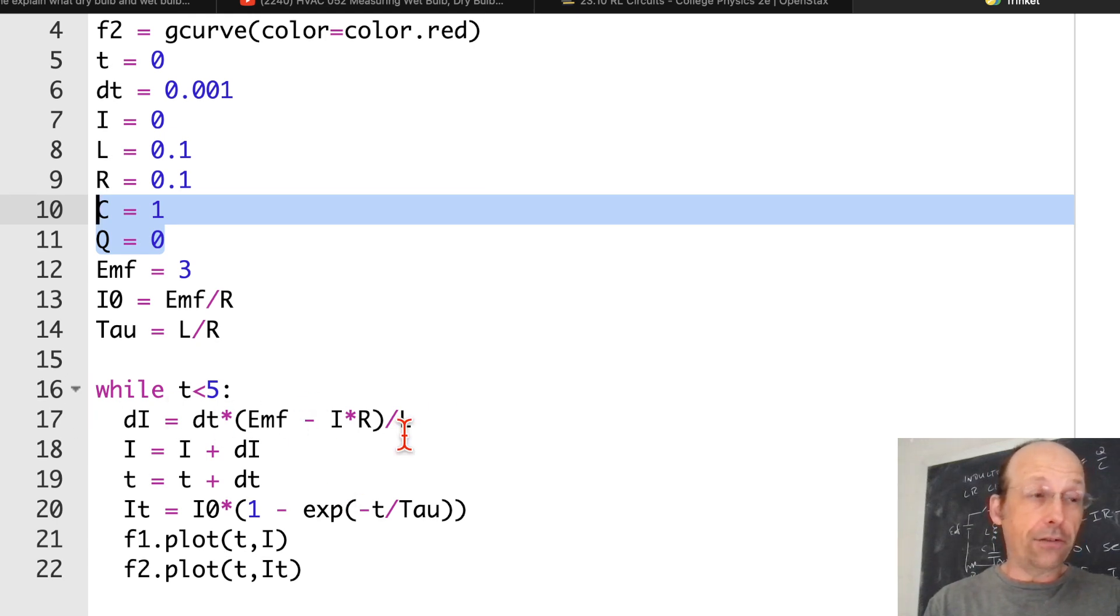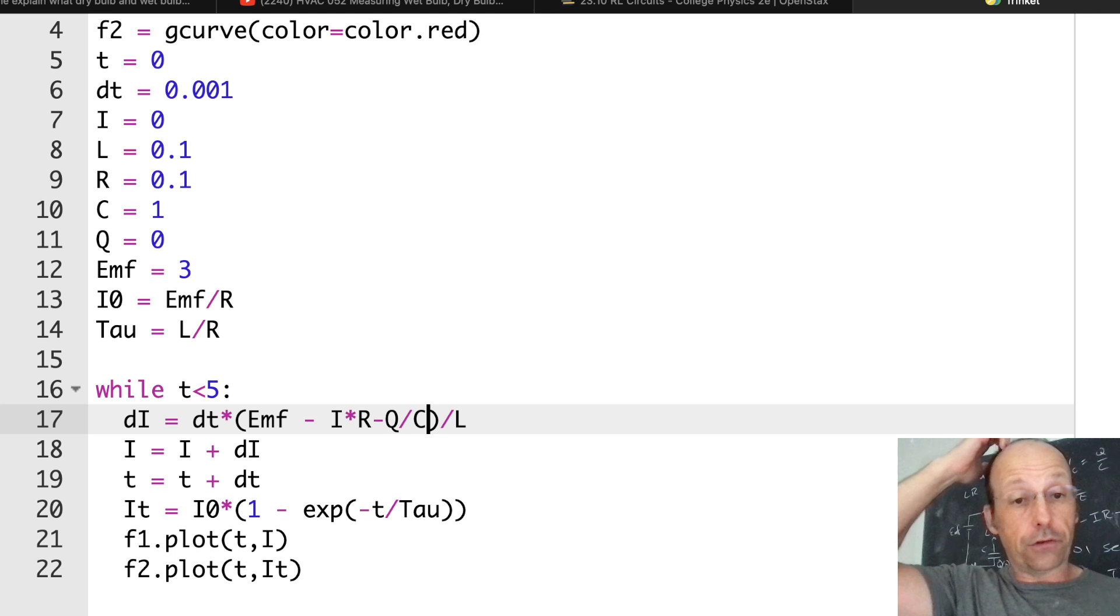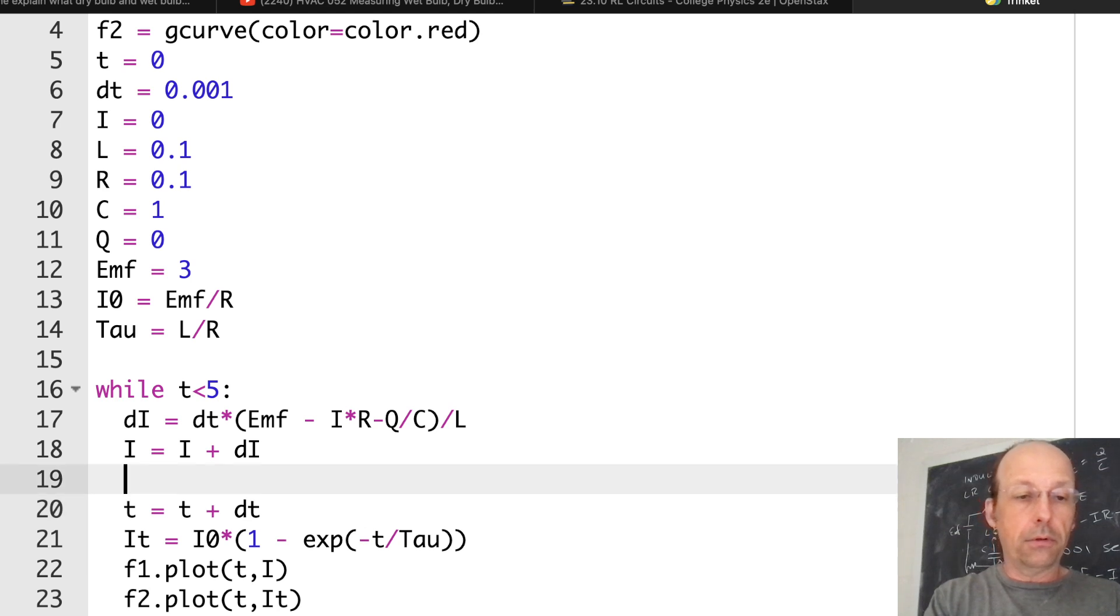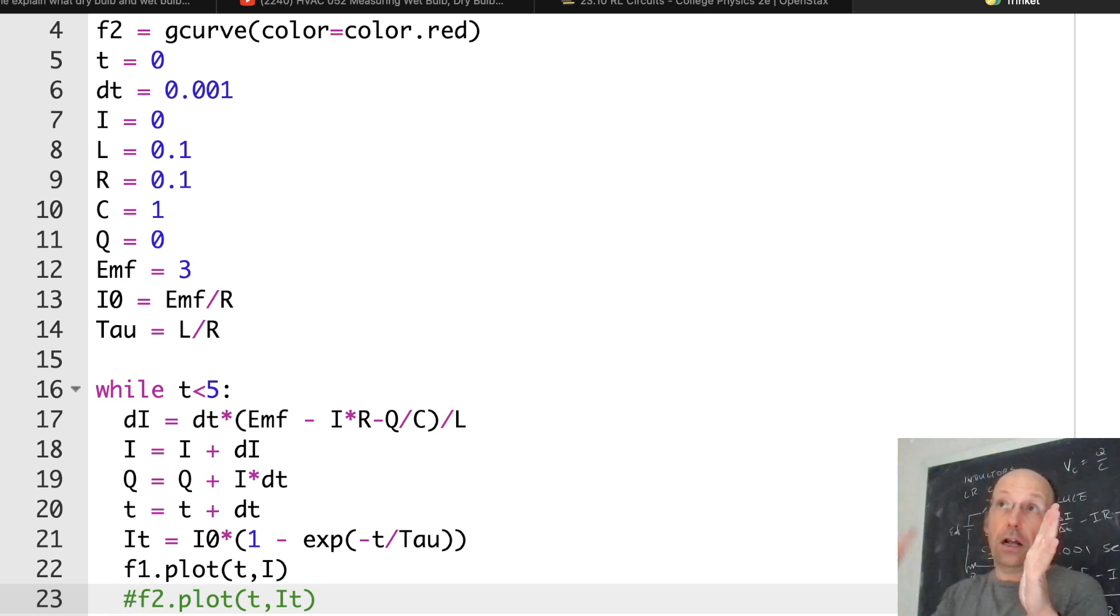So I added these two lines right here. C is equal to one, Q is equal to zero, because I need an uncharged initial value of the capacitance. Down here, I'm just going to modify this equation to add in the minus Q over C. That's the voltage across the capacitor. That didn't change that much. I'm still going to update the current. Now I'm going to update the charge. Q equals Q plus I times DT. That's it. Let's get rid of this plot. I don't want to actually plot that second curve. So in this case, I'm going to close the switch. It's going to have a capacitor, resistor, and inductor in there. Let's see what happens.